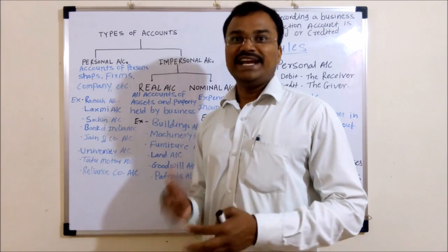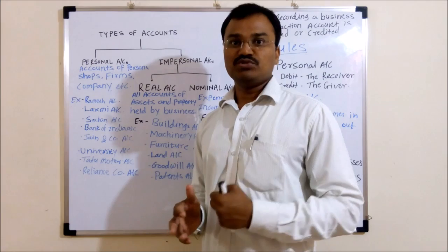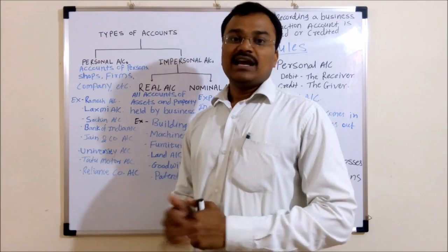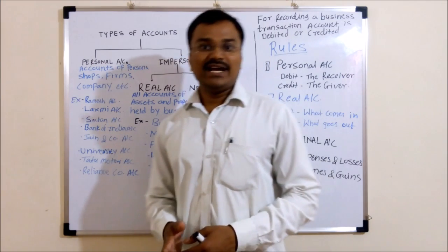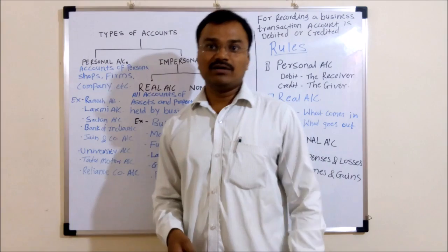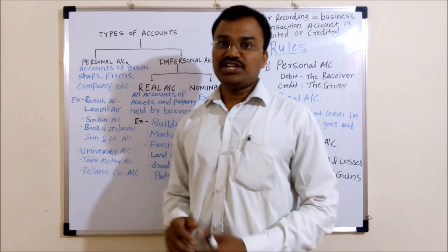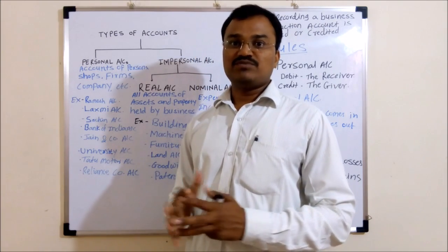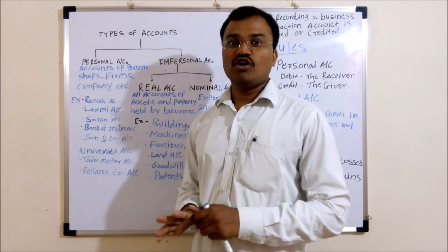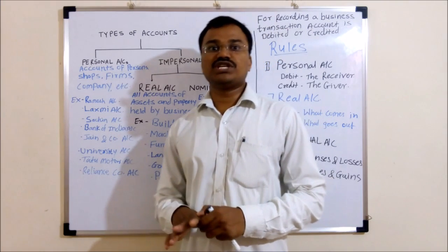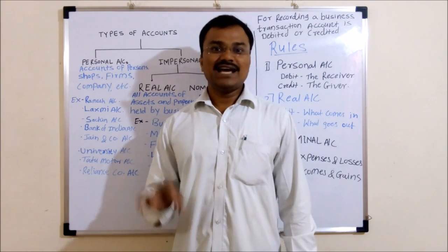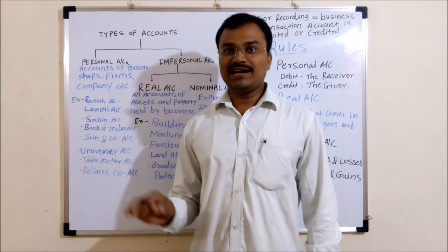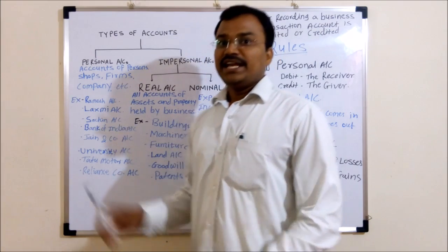For example, Bank of India can receive cash, can pay cash, and it can make agreements with any firm on its own. Therefore, these types of firms, institutions, or companies are known as artificial persons created by the law.